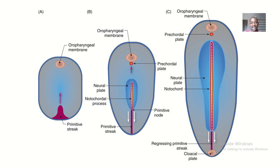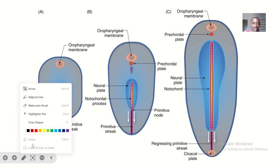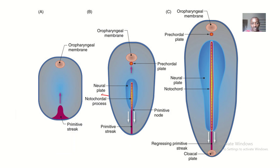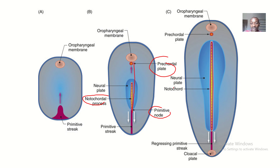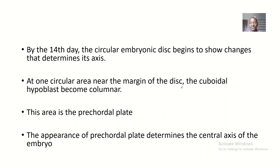Earlier on we spoke lightly on the pre-cordial plate when we were talking about the notochord. We said that the notochordial process extends from the primitive node to the pre-cordial plate, and when it extends from the primitive node to the pre-cordial plate, it becomes the notochord properly.